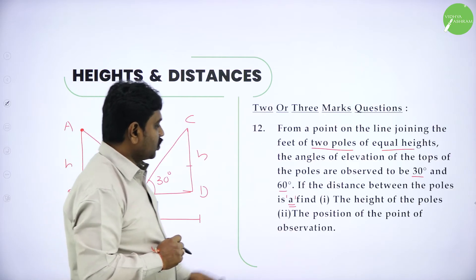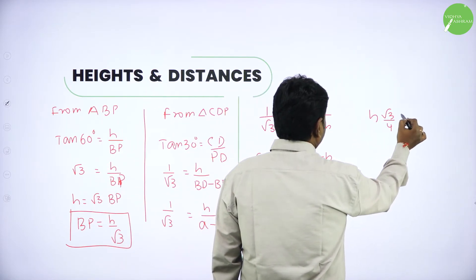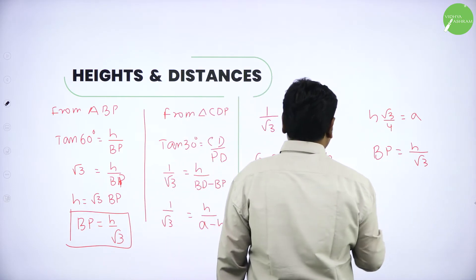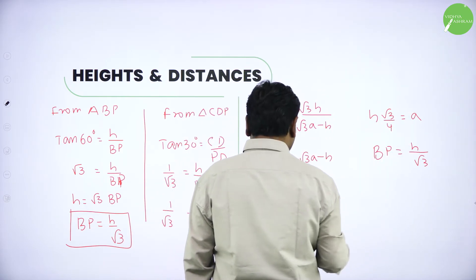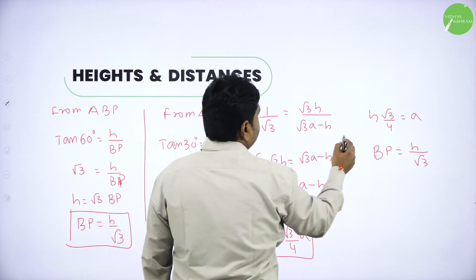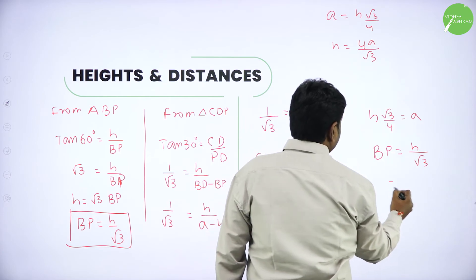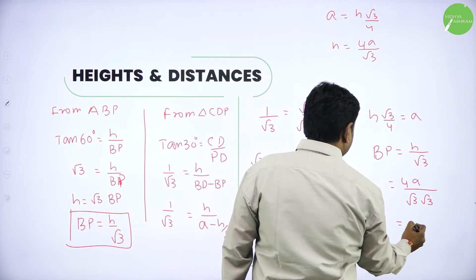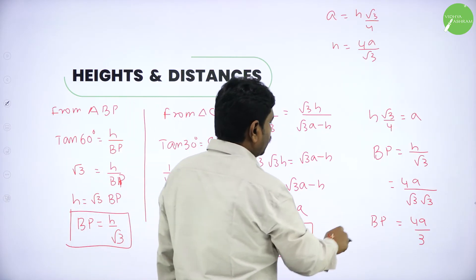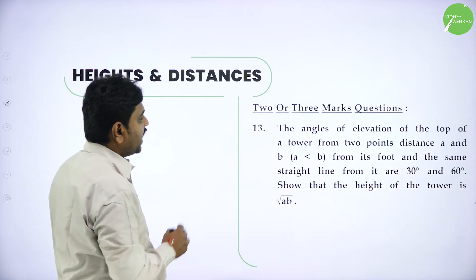The height of the tower in terms of A is root 3 by 4 times A. They also want the position of the point of observation. BP equals H over root 3, and substituting H equals root 3 A over 4: BP equals (root 3 A over 4) over root 3, which gives BP equals A over 4, or 4A by 3 after simplification. This is the position from the pole making 60 degrees.